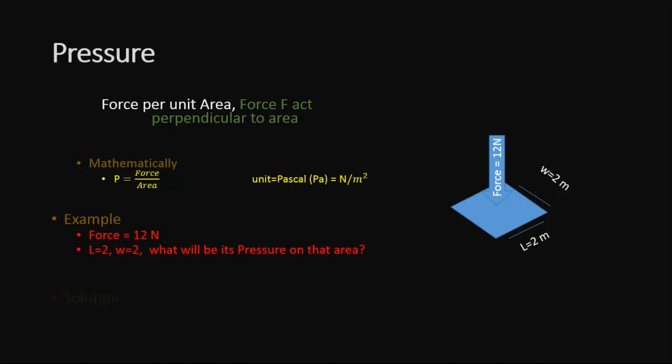Solution: First, we will determine the area of that surface. We know the length and width. By multiplying length and width, we get 4 meter square, which is the area of that surface.